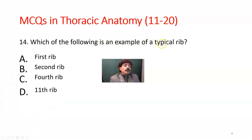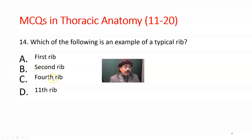Which of the following is an example of a typical rib? Options include first, second, and eleventh rib. Among the list, the fourth rib is a typical rib. Ideally, the second to seventh ribs are typical ribs — these are costovertebral ribs with typical features. The first, second, and eleventh ribs have atypical features, so they are not typical ribs. The correct answer is the fourth rib.